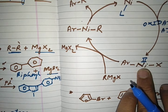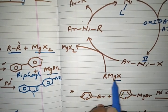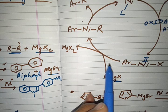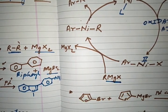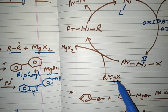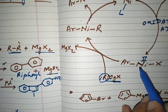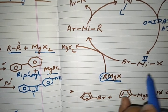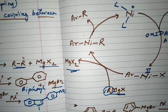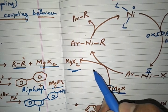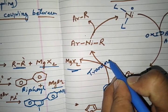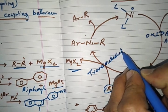The second step is transmetallation. After oxidative addition, this intermediate reacts with the Grignard reagent. Magnesium, being a metal, exchanges its R group with nickel, and nickel exchanges its X with magnesium. Magnesium takes the X and forms MgX₂ as a side product. This exchange of groups between two metals is called transmetallation.